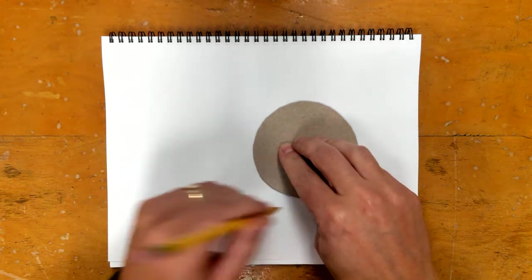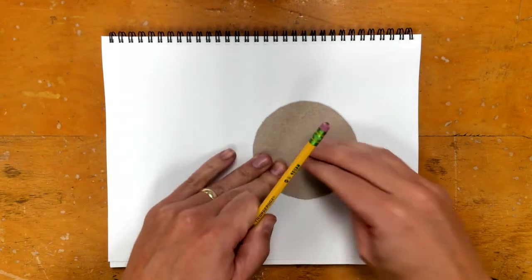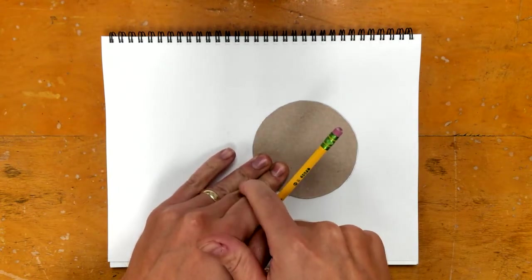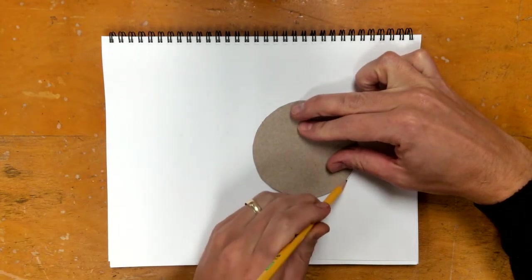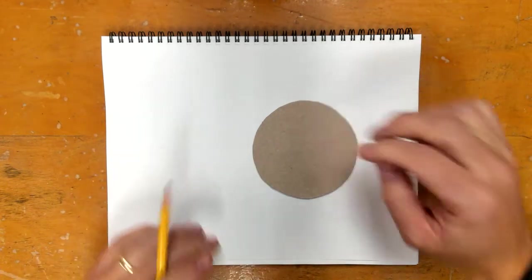I go around and then once I get to my hand I have to hold it with my hand that holds the pencil and then adjust my holding. So now I can go back here and trace.